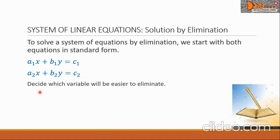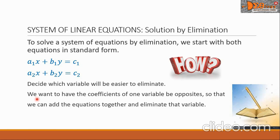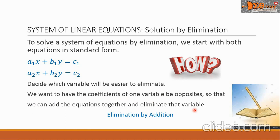Now we will decide which variable will be easier to eliminate. Once we choose the variable to be eliminated, we want to have the coefficients of that variable be opposites, so that we can add the equations together and eliminate that variable. This process is what we call elimination by addition.